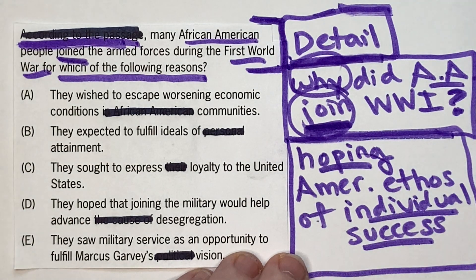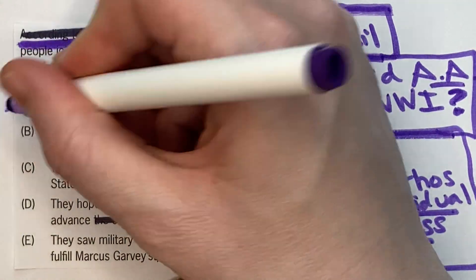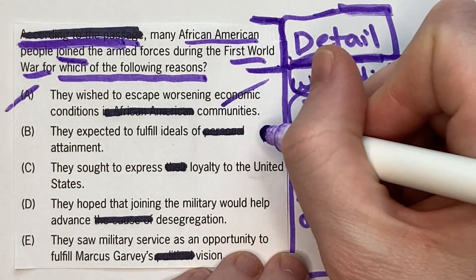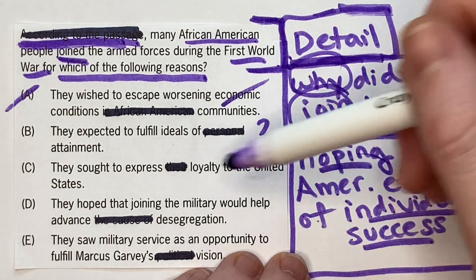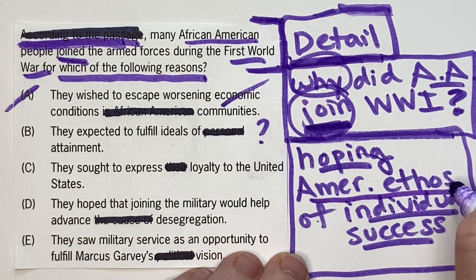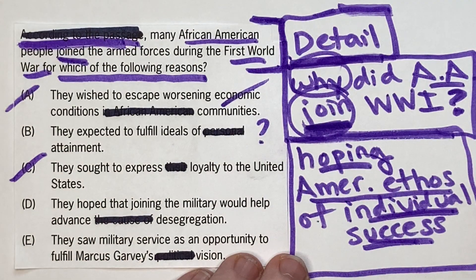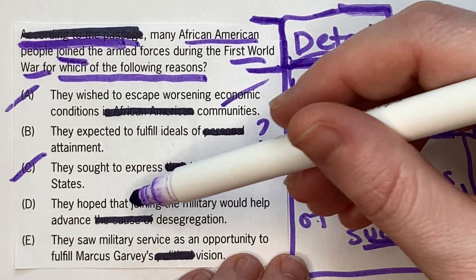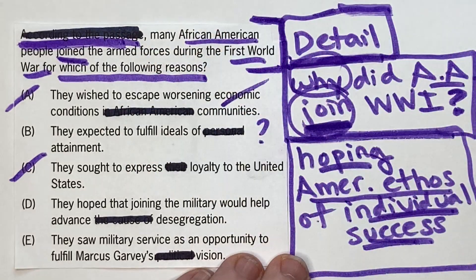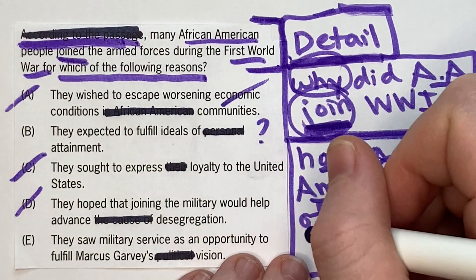Now let's look at the answer choices. A says 'they wish to escape worsening economic conditions' — economics wasn't mentioned at all, so A is out. B says 'they expect to fulfill ideals of attainment' — that's in line with what we said, maybe. C says 'they sought to express loyalty to the United States' — this is tricky because they did talk about American ethos, but it was about individual success, not loyalty, so that's not quite right. D says 'they hoped joining the military would help advance desegregation' — that might appear later in the passage, but it's not specifically why they joined.